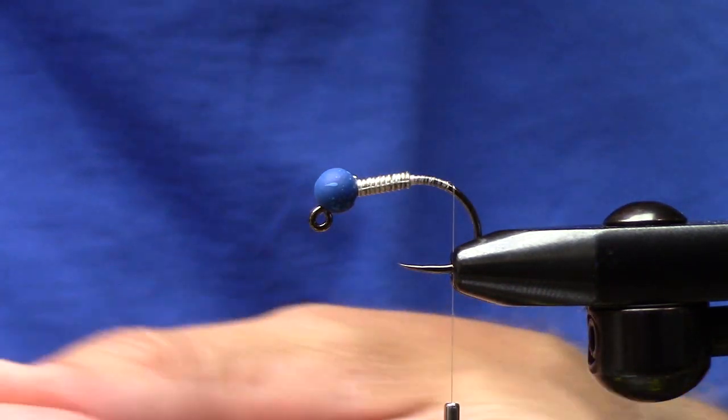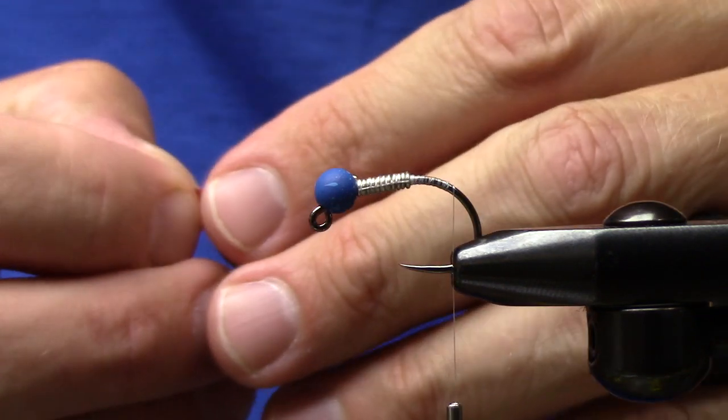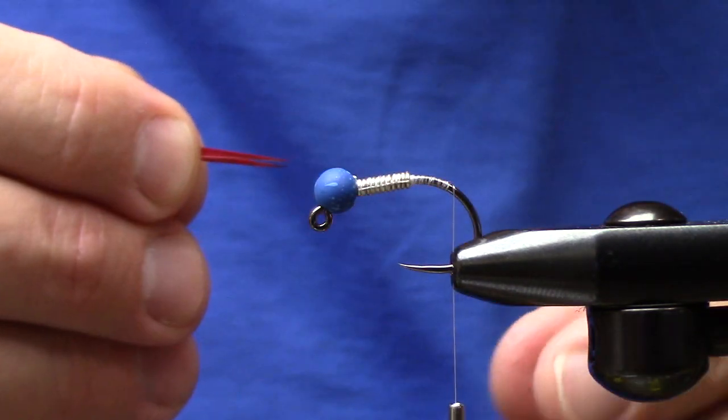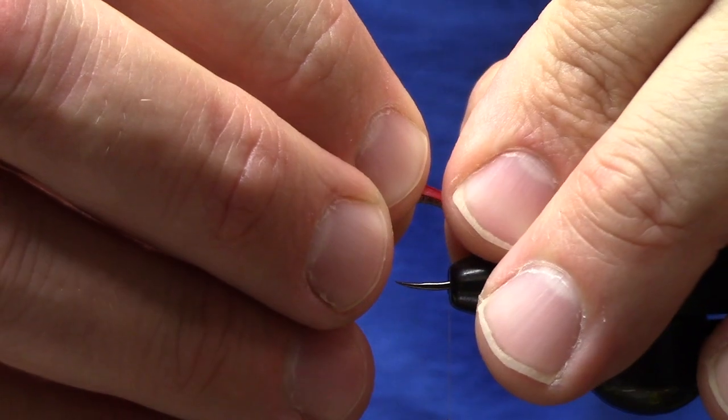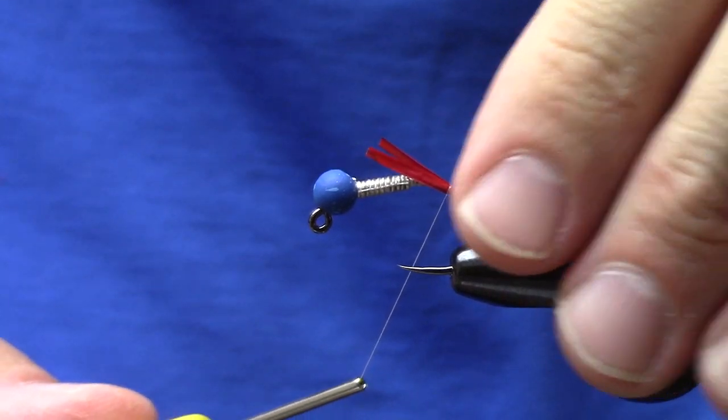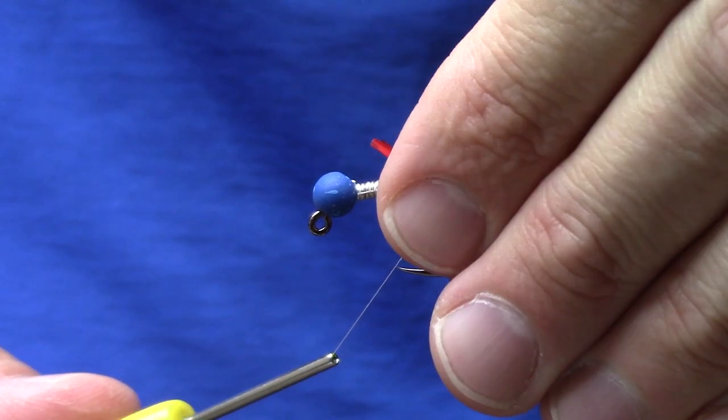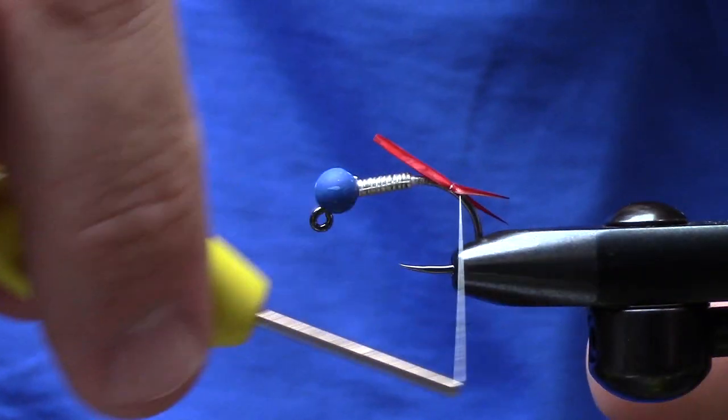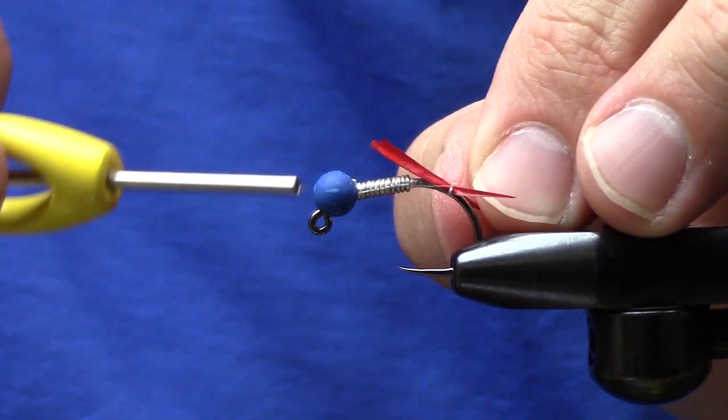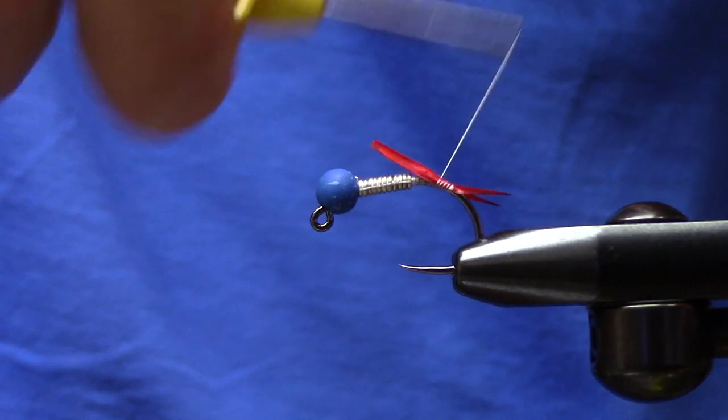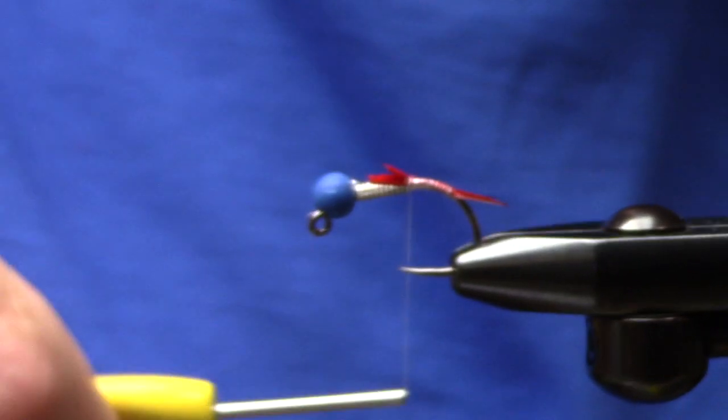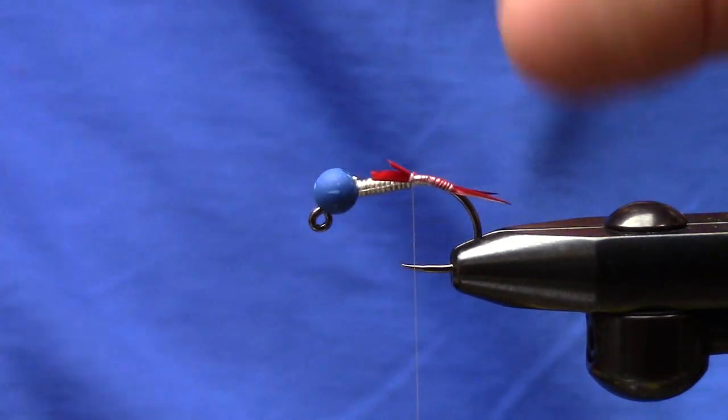Next up we're going to use some biots and these are going to be in red. If you guys want to tie copper johns in other colors, you can tie them in pretty much any color of the rainbow - it's one of the best attractor patterns probably of all time. I'm going to put a feather on each side, or a biot on each side as you can see, and I just pull tight there. I put one wrap in there and one wrap that way. What I like to do personally is just wrap these forward - kind of helps build a little bit of bulk, secures them in there, and you get that nice split tail there. We're going to trim off the excess here and continue wrapping forward.